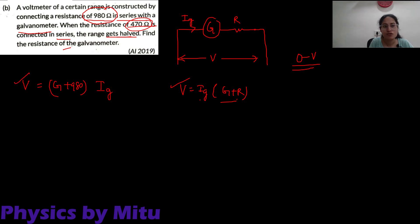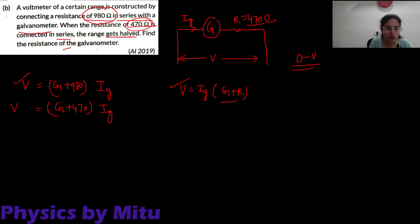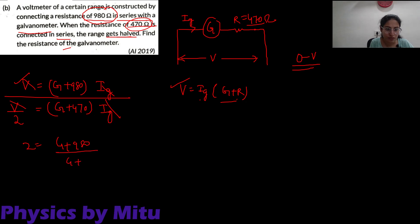Let the range be 0 to V. Now, if 470 ohm is connected in series instead, then the formula becomes (G + 470) into IG, and the range is 0 to V/2. Taking the ratio of the two equations, you will get 2 is equal to (G + 980) upon (G + 470).